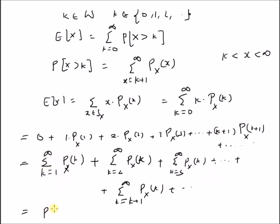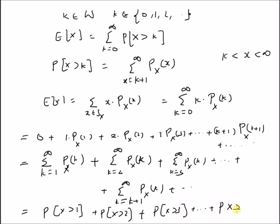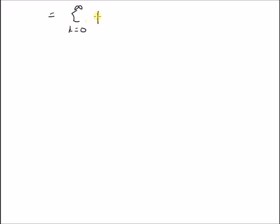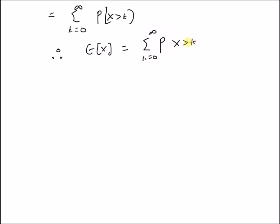The first term can be written as probability of x greater than 0 using the definition that P(X > k) equals the summation k equal to 0 to infinity of P_X(x). This summation can then be rewritten as P(X > 1) plus P(X > 2) plus P(X > 3) and so on, until we have P(X > k) up to infinity — which is nothing but equal to the summation k equal to 0 to infinity of P(X > k). Therefore, for a discrete random variable, the expectation E[X] can be written as the summation k equal to 0 to infinity of probability of x greater than k.